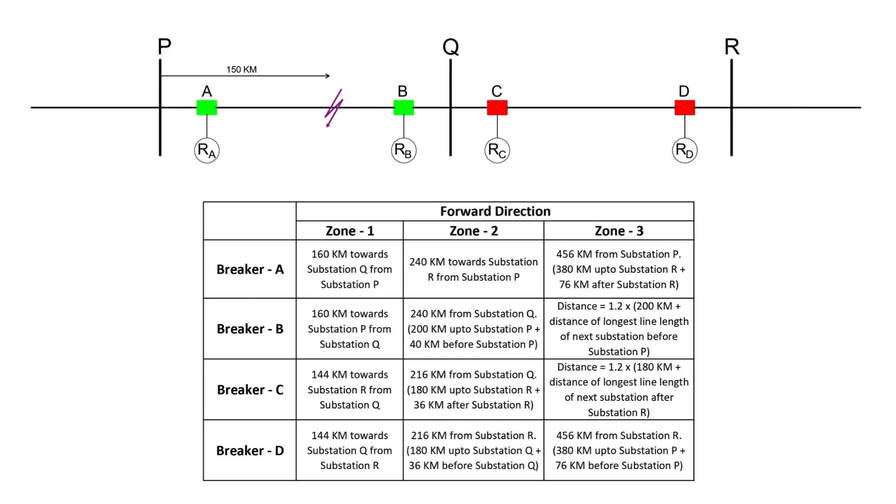But what if one of the breakers, let's say breaker A, fails to trip? In that case, the relay at substation Q will immediately send a direct trip signal via PLCC to substation P to trip breaker A and isolate the faulty line from both ends. The relay B will sense the fault in zone 1 because the distance of the fault from Q is 50 kilometers, which is within the zone 1 limit of B.